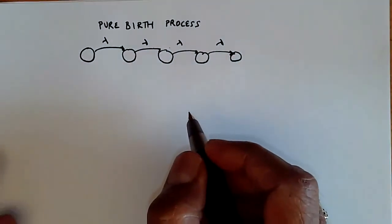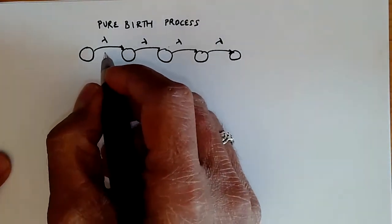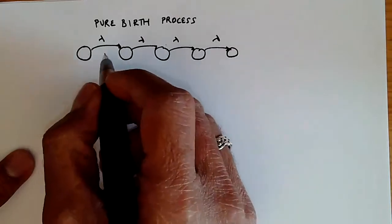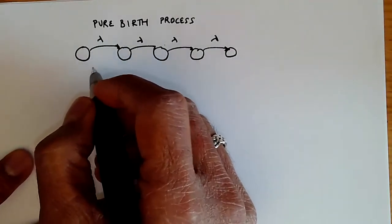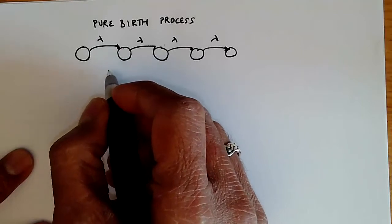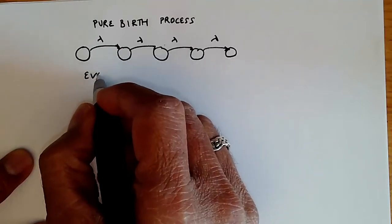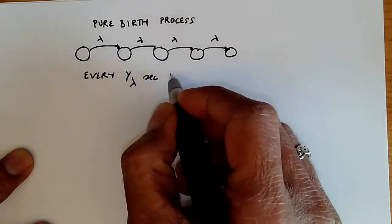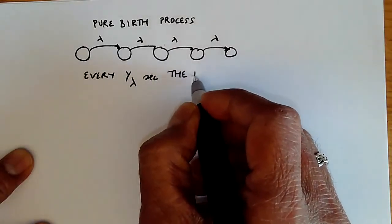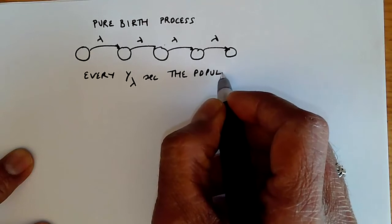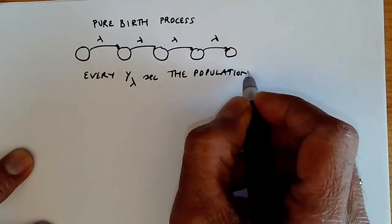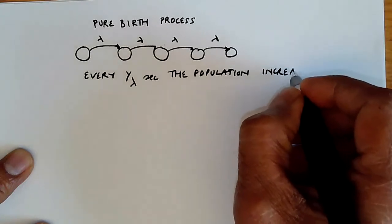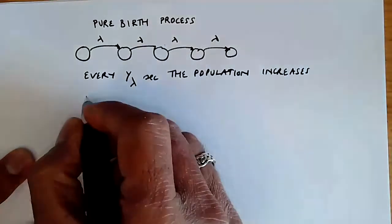This lambda represents the rate at which we transition from one state to another. A rate of lambda means that we expect the population to grow by one every one-over-lambda seconds. So every 1/λ seconds the population increases by one, and of course this is going to lead to an unbounded population growth.